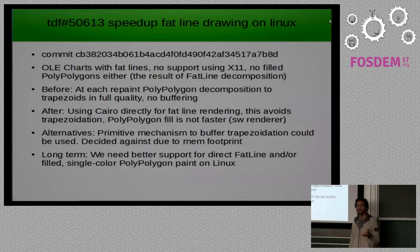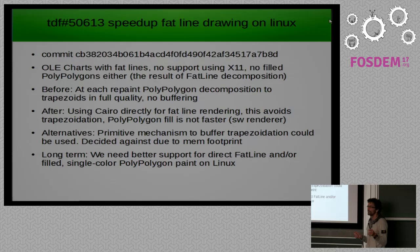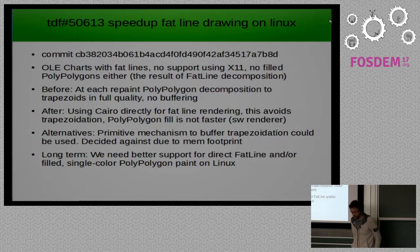Maybe after each of the examples — I have four of them — if you have questions, we can make a short break. Let's go to the next one. We have a problem with fat line drawing on Linux. A fat line is every line — whether it's a straight simple line with two points or a bezier curve — when the line thickness is not zero, which means in the Office you have, independent of zooming, a 1-pixel line. Most of the problems come from OLE charts which have such fat lines. In X11 there is simply no support for filled poly-polygons, which are the result when you decompose fat lines, and no direct fat line support either.